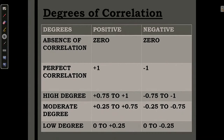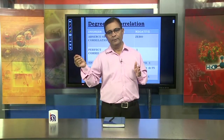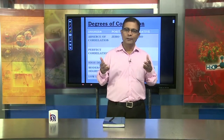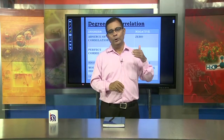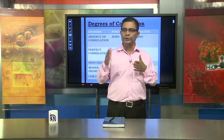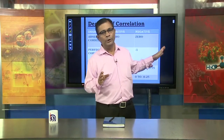Either in positive direction or in negative direction. Next is high degree of correlation — that is between 0.75 and 1, either on the positive side or the negative side. If the value of the calculation lies between these two points, this is called high degree of correlation. Next is the moderate value — that is between 0.25 and 0.75. If the value lies between these two, this is called a moderate value of correlation. The last is low degree of correlation when the value lies between 0 and 0.25, either positive or negative.